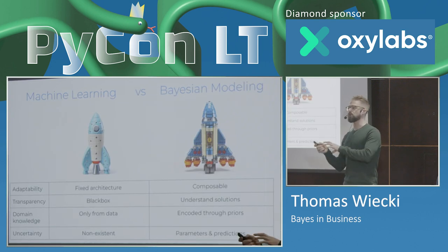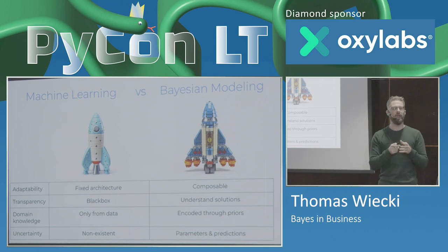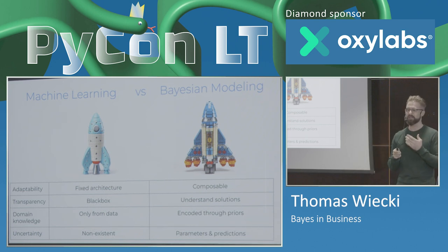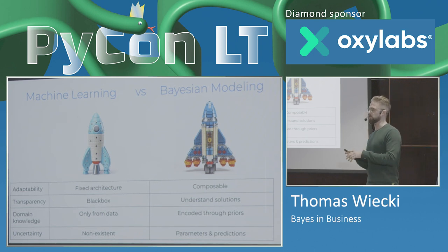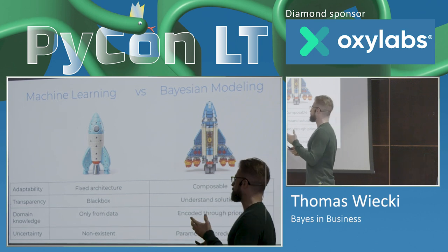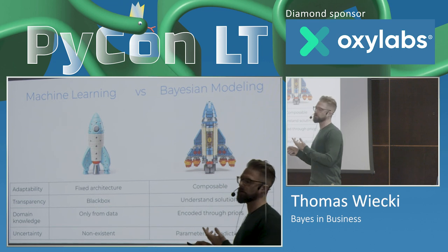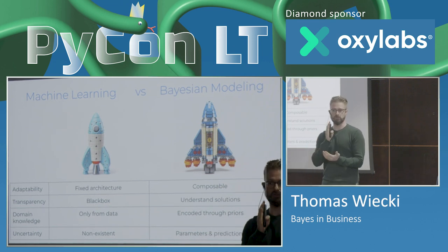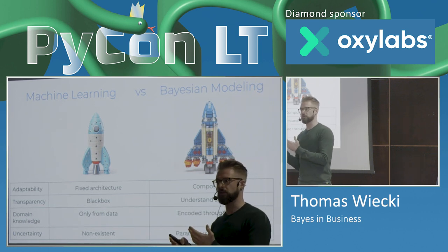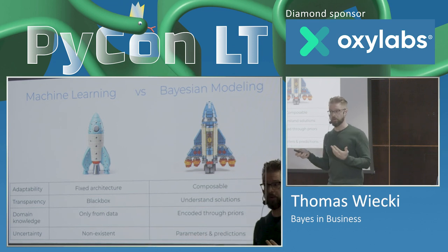Of course, you don't have to build your own rocket — you could just go to a store and buy one, prepackaged. This is basically the machine learning approach, where you just import a random forest model and fit your data. And there are certain classes of problems where that's just the right approach. But if you want to learn about your data and get insight into it, I would argue that the Bayesian approach is better.